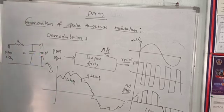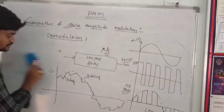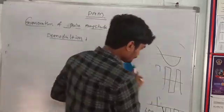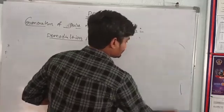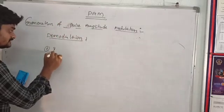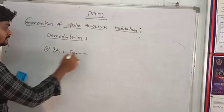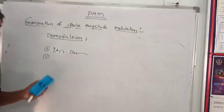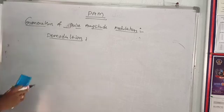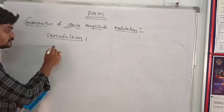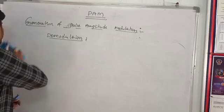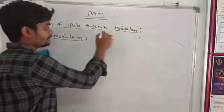What are the advantages of Pulse Amplitude Modulation? It is easy to design. The modulation process is very easy. The demodulation process is very easy. What is the disadvantage of Pulse Amplitude Modulation? The signal to noise ratio is very poor. And it does not used for long distance communication. This is the disadvantage of Pulse Amplitude Modulation.